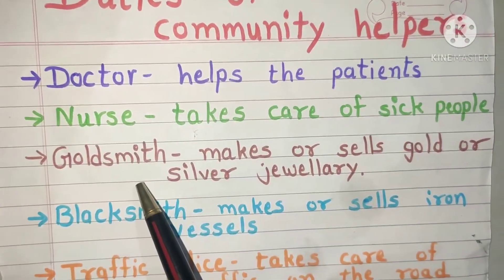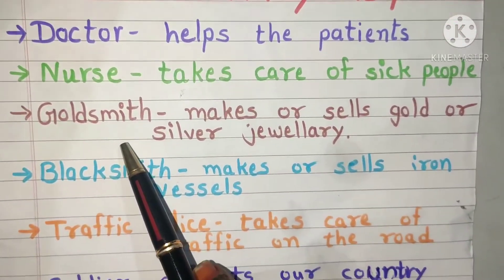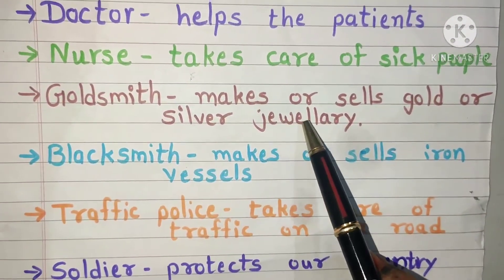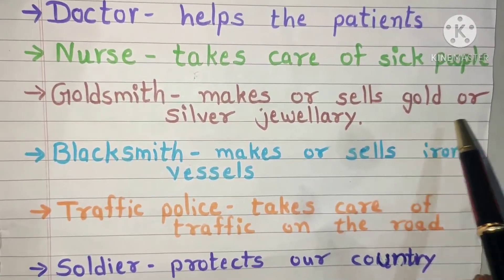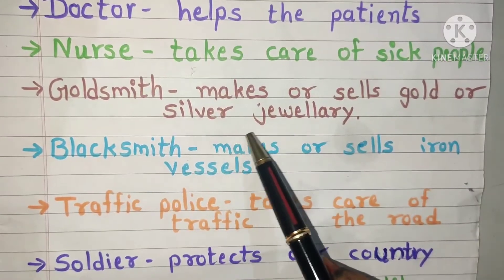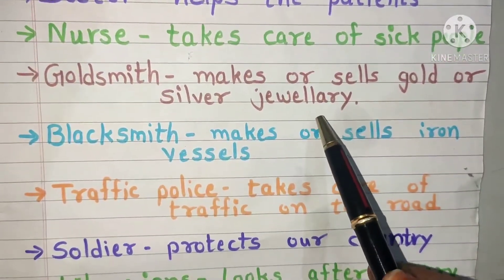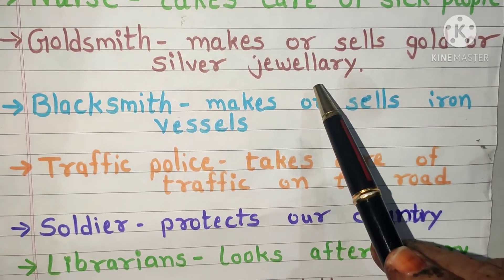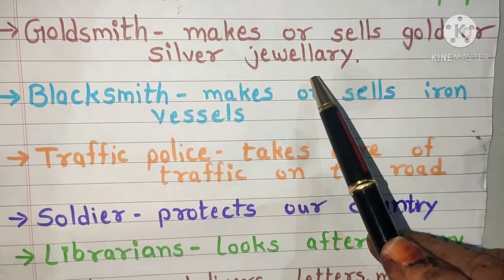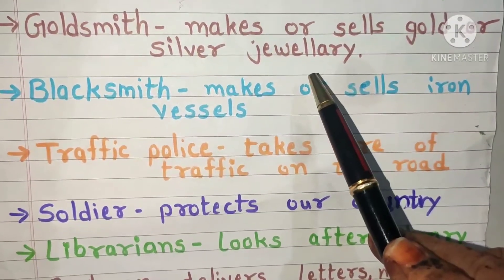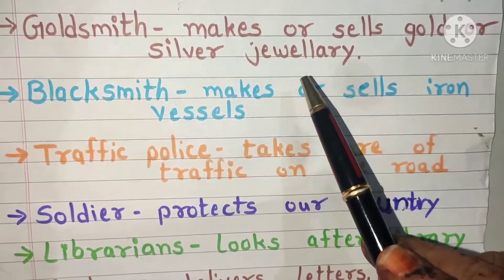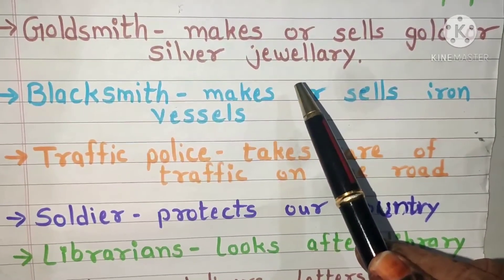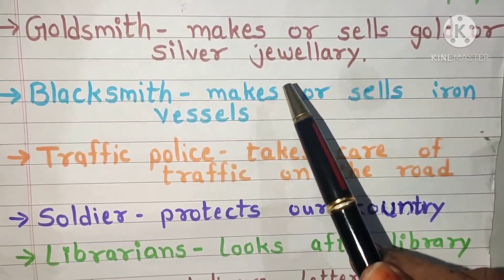Goldsmith, also known as soni, makes or sells gold or silver jewellery as well as some vessels also. Do you know it's good to have water and milk in a silver glass?